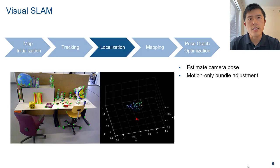Then in the localization stage, you can use the 3D to 2D correspondence to estimate the camera pose in the world coordinates. To refine the estimation, use motion-only bundle adjustment.